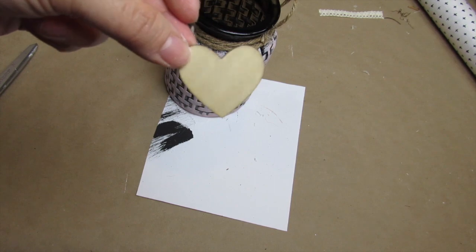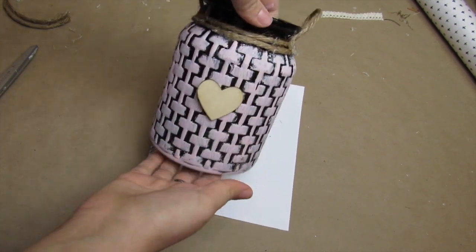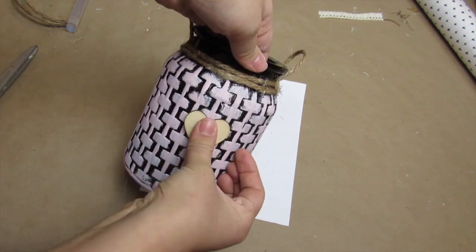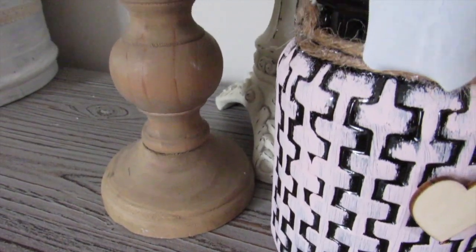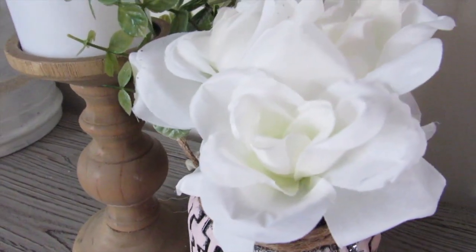To make this a little more Valentine's Day themed, I took one of these wood DIY stickers from Dollar Tree, left it unfinished, added a little bit of hot glue to it, and then pressed it right in the front.